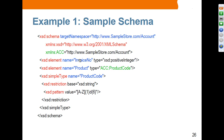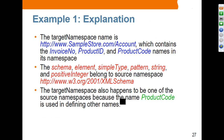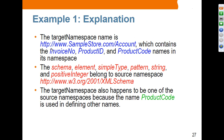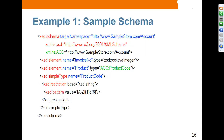Before these elements can be used by an XML document instance of this XML schema, you have to provide a target namespace. This target namespace will be used in the XML document instance when they are actually using these elements. I will talk about this example one more time when we cover XML schema. The target namespace name contains the invoice number, product ID, and product code names. The elements defined in this schema belong to this target namespace.